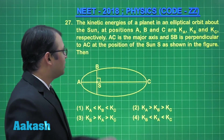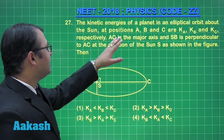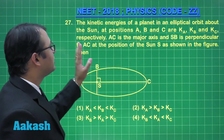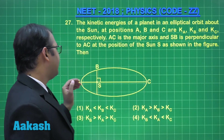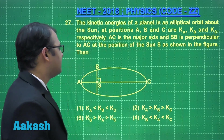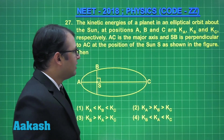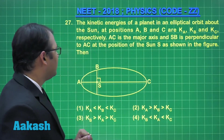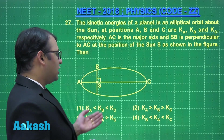Question number 27: the kinetic energy of a planet in an elliptical orbit around the Sun at positions A, B, and C — kinetic energy A, kinetic energy B, and kinetic energy C. AC is the major axis, and B is perpendicular to AC at the position of the Sun. The relation between the kinetic energies is being asked.